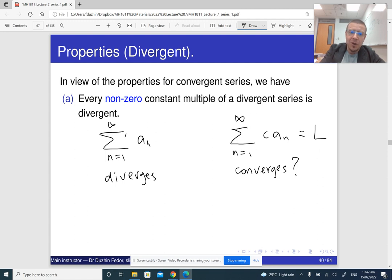But if that is true, then we could construct the original series by multiplying elements of c a_n with 1 over c. Because I can write c here and 1 over c here. And it would mean that the sum of the original series would be 1 over c times L. So it would be finite. So it would mean that my original series would be convergent too, but it is not.